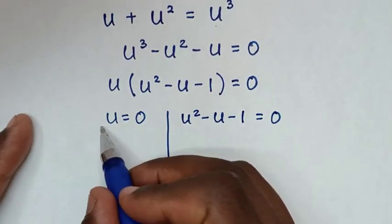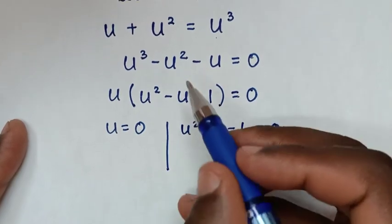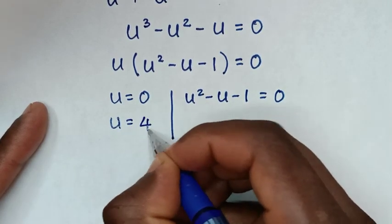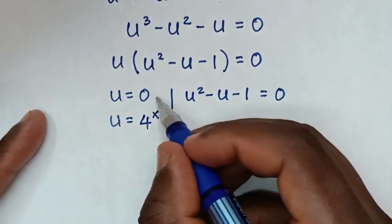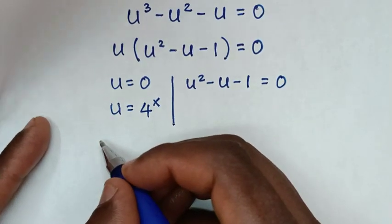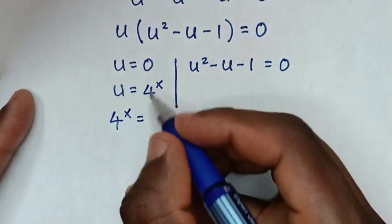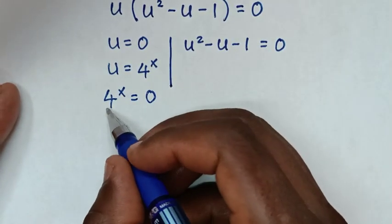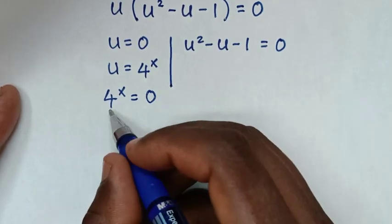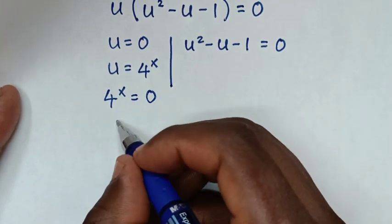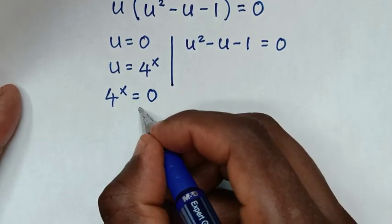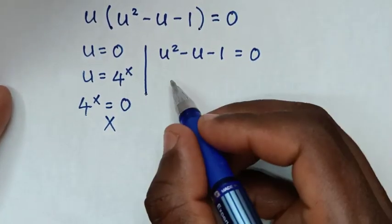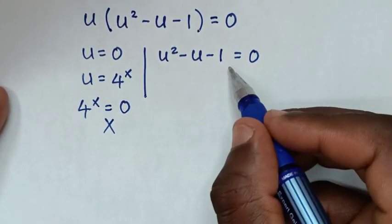To find the value of x from the first solution, we recall that we let u equal to 4 power of x. Comparing these two equations, it will be 4 power of x is equal to 0. But 4 power of any number is not equal to 0 — even 4 power of 0 is 1, not 0 — so this solution is not possible and we can't find the value of x from here.